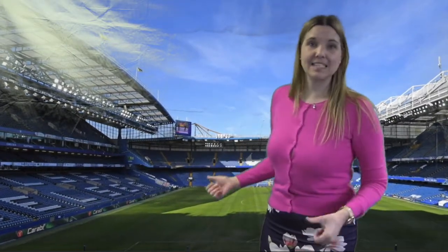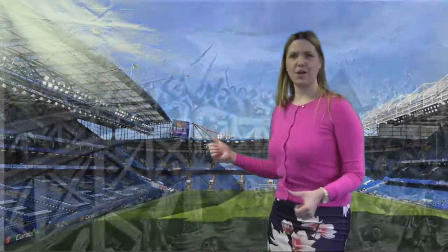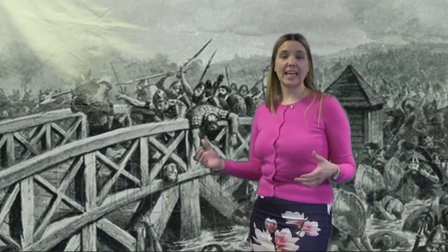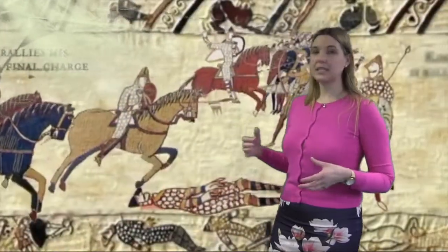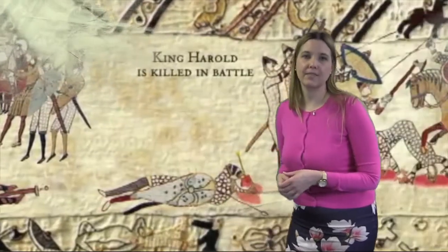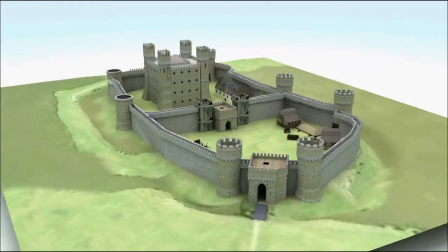Here we are at Stamford Bridge — not that Stamford Bridge, this Stamford Bridge. This is the battle site in 1066 where King Harold of England wins the battle before suddenly having to march 200 miles south to fight William of Normandy. William — spoiler alert — kills Harold and manages to become King of England. The GCSE course looks at how William controlled the English people when he became king, the rebellions he faced, and the castles that he built.